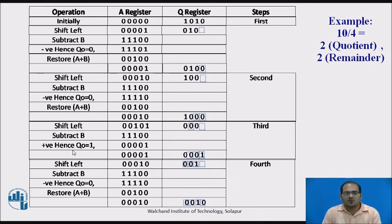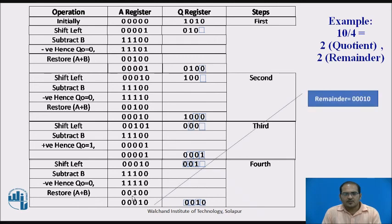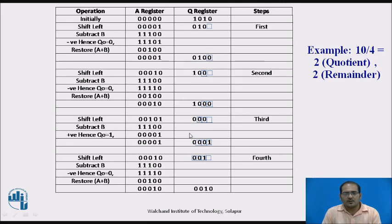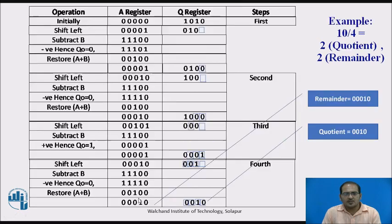If the result is positive — a successful subtraction — Q0 is set to 1. If negative — an unsuccessful subtraction — Q0 is set to 0. At the end of the table, the remainder is available in the A register and the quotient in the Q register. You can confirm: 0010 in binary is 2, so 10 divided by 4 gives quotient 2 and remainder 2.